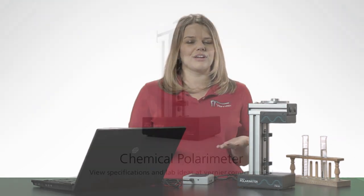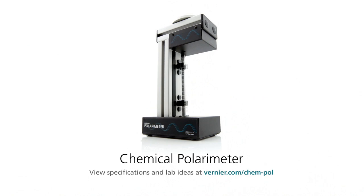A chemical polarimeter is a device for measuring stereochemistry of molecules. Today I'm going to give you a brief introduction on how to use the polarimeter.